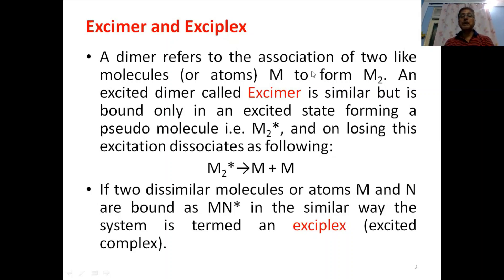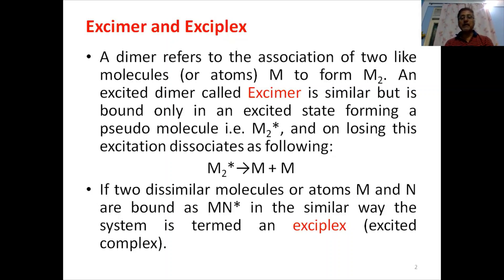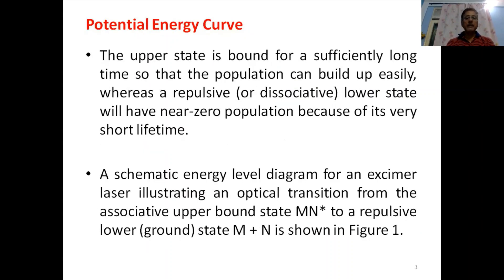A dimer refers to the association of two like molecules or atoms. But if we have the association of two molecules or atoms which are dissimilar, then we have a laser that we call the exciplex — that is, excited complex — where M and N come together to form MN, or in the excited state it is MN star.